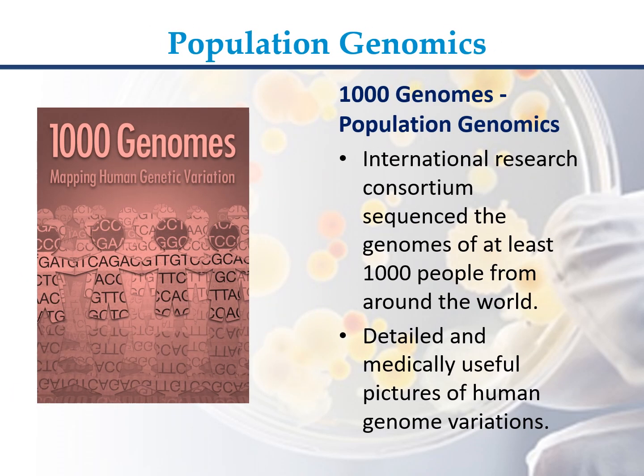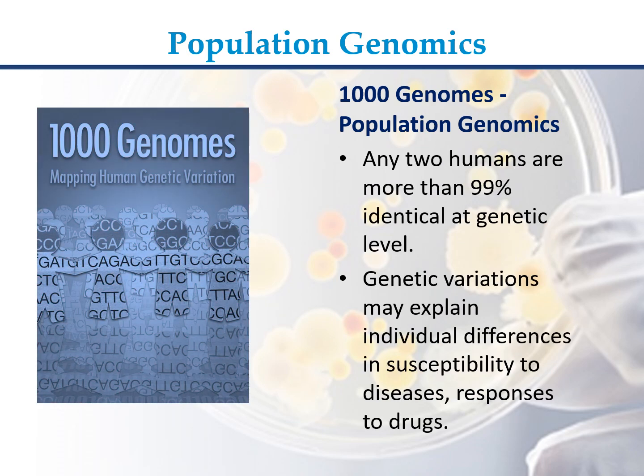The 1,000 Genomes project is an international research consortium that sequenced the genomes of at least 1,000 people from around the world, providing detailed and medically useful pictures of human genome variations. Any two humans are more than 99% identical at the genetic level, and genetic variations may explain individual differences in susceptibility to diseases and responses to drugs.